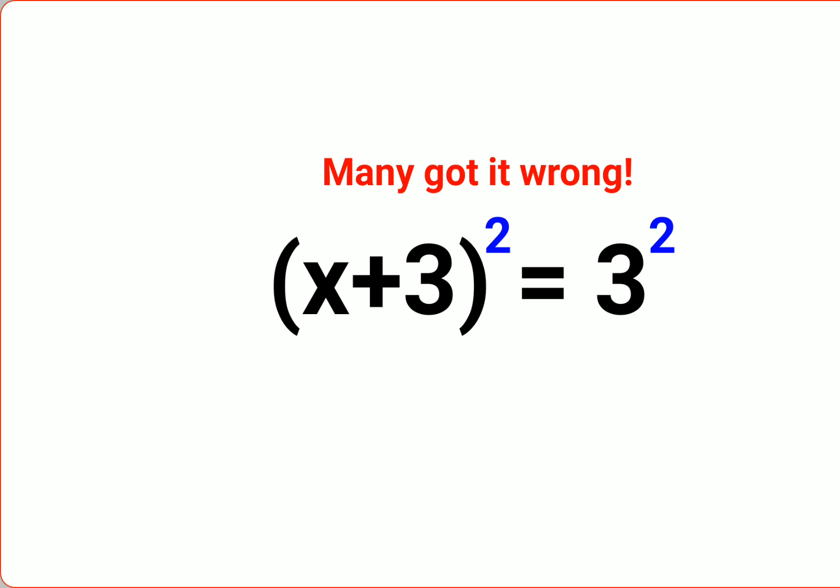Okay, so the first thing you see we have (x + 3)² = 3². So let's do the expansion of (x + 3) as what (a + b)². The expansion is nothing but what a² + 2ab + b².